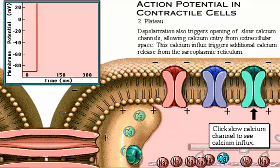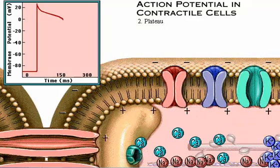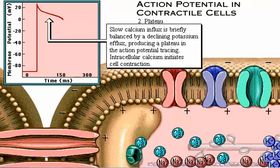Depolarization also triggers the opening of slow calcium channels, allowing calcium to enter the cell from the extracellular space. This calcium influx triggers additional calcium release from the sarcoplasmic reticulum. The slow calcium influx is briefly balanced by a declining potassium efflux, producing a plateau in the action potential tracing. Although not shown here, the calcium inside the cell initiates cell contraction.